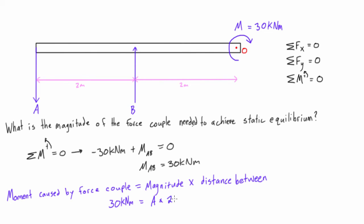Well, the distance between is 2 meters. So if we just divide 30 kilonewton meters by 2 meters, we'll actually find that A here, the magnitude of A, will be 15 kilonewtons.